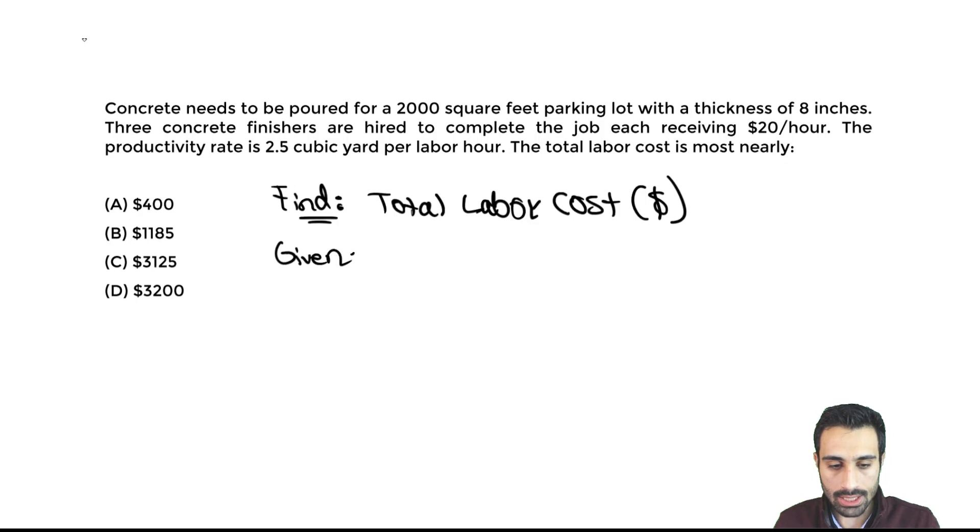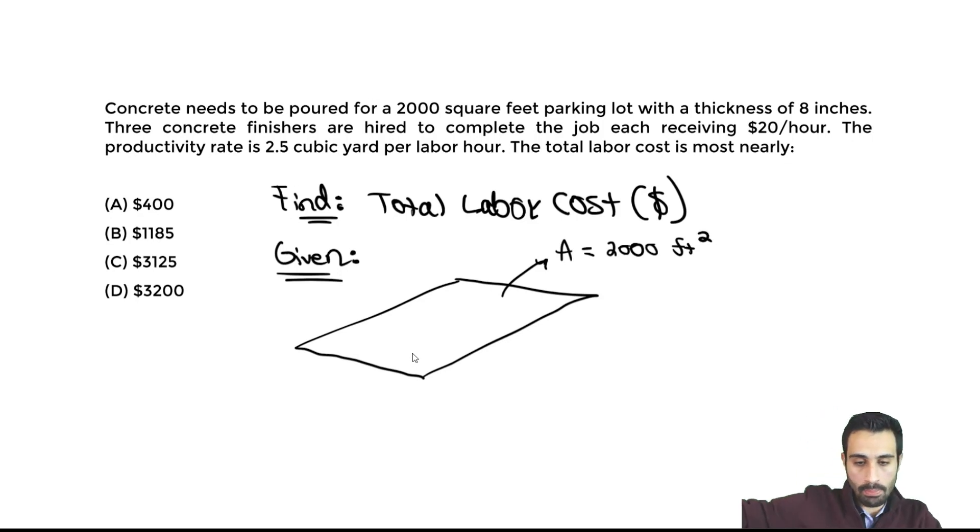The biggest thing in this case is actually trying to visualize this parking lot. We have a 2,000 square foot parking lot. I can denote that by a rectangular shape, an area of 2,000 foot squared. When we have a parking lot, there's always that thickness, the thickness of the pavement or the depth. In this case, it's 8 inches. That would be the thickness of the pavement.